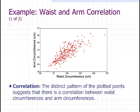So here's an example of waist circumference as it is related to arm circumference. And you can see there's a general uphill pattern here. And so we can say it seems as if they're associated. Those with a larger waist circumference tend to have larger arm circumferences.